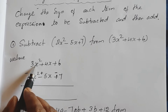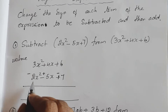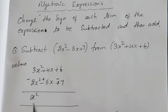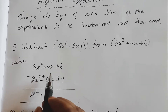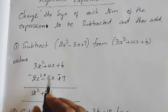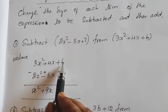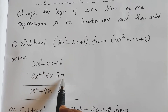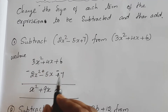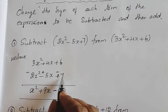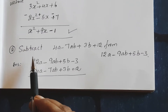Now combining like terms: 3x square minus 2x square gives x square. Then plus 4x plus 5x gives 9x. Then positive 6 and negative 7 — the negative value is higher, so the sign is negative: 7 minus 6 equals 1. So the answer is x square plus 9x minus 1.